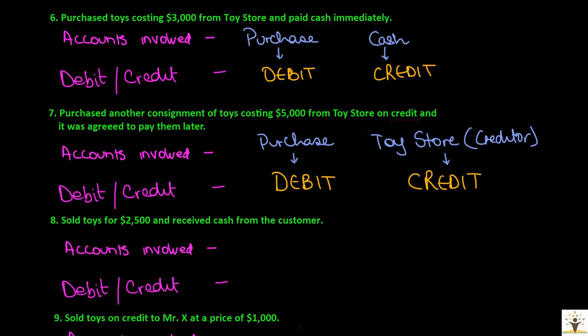Transaction: the business sold toys for $2,500 and received cash from the customer. Since the business is selling toys, sales account is affected; and it is receiving cash from the sale, so cash account is also affected. In a sales transaction, the goods are going out of the business and the asset is decreasing — hence sales account will be credited. And the business is receiving cash, so cash is an asset increasing — hence cash will be debited.